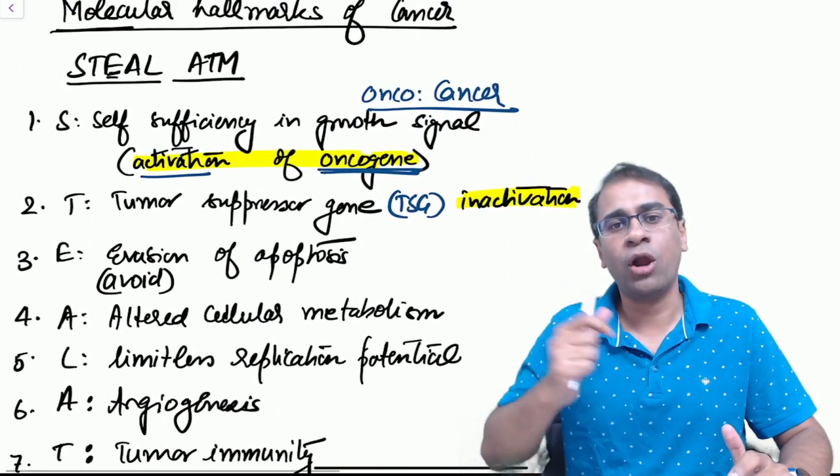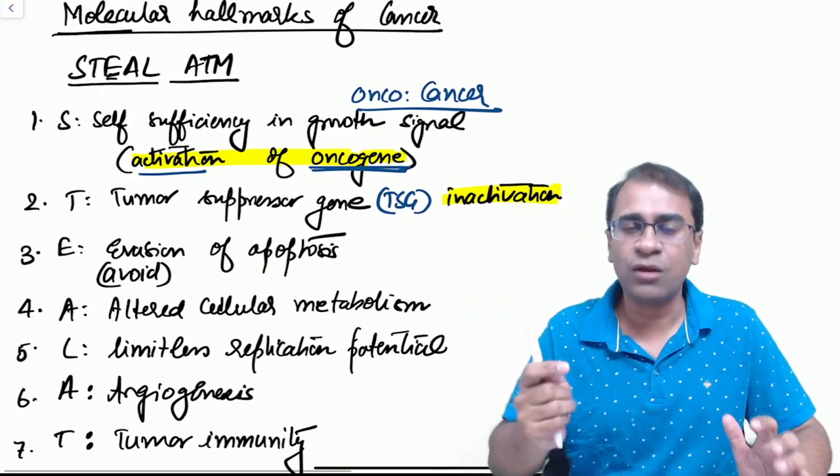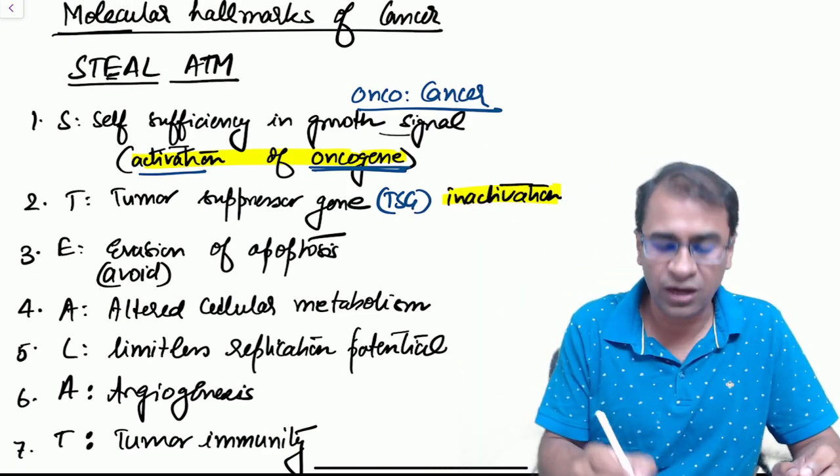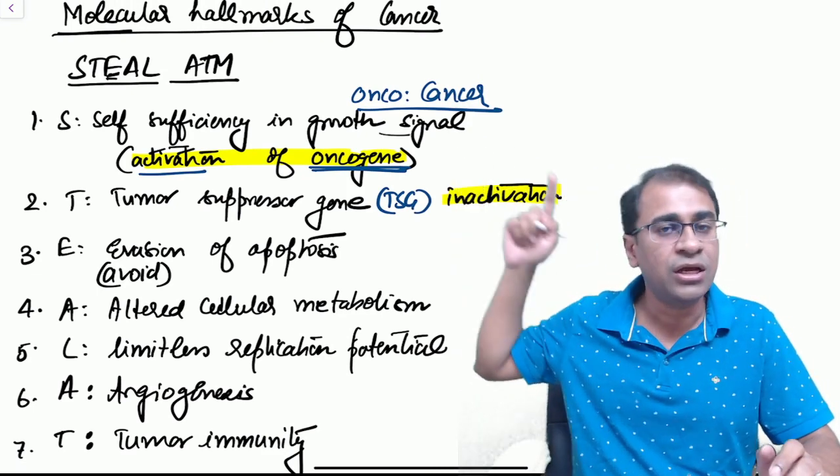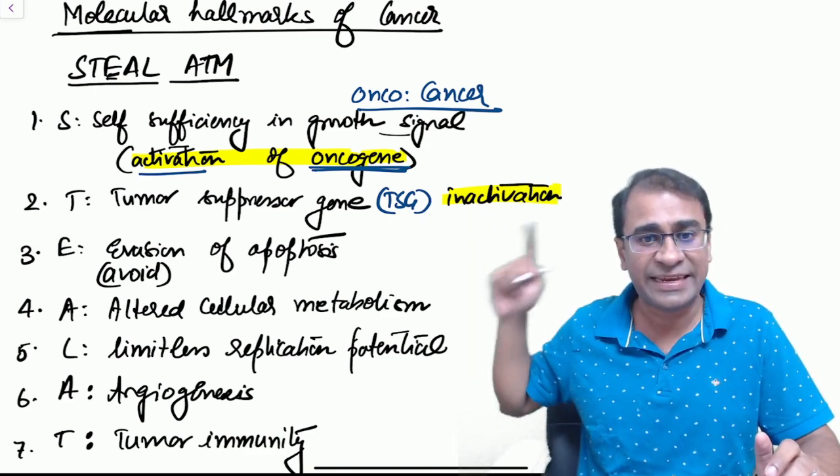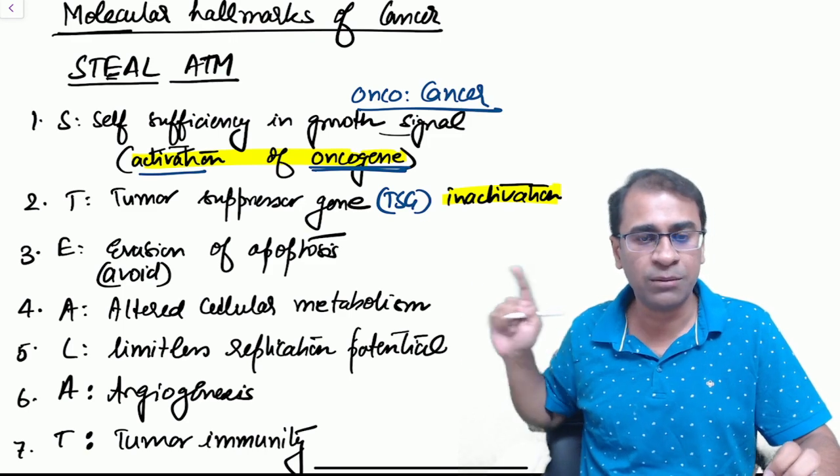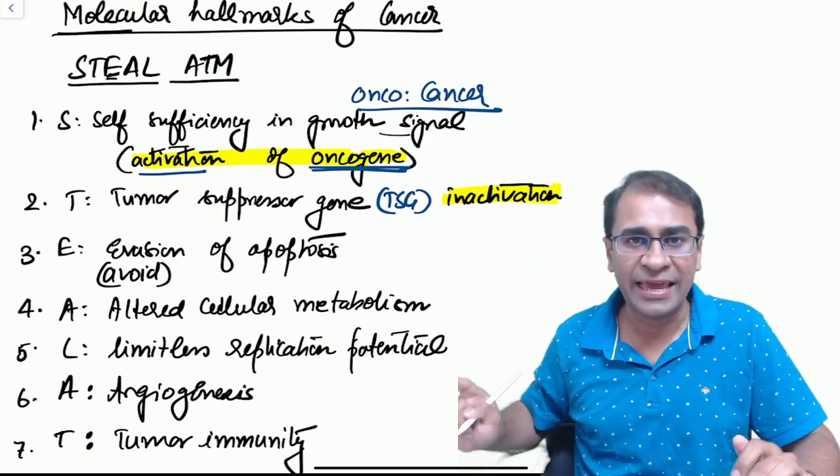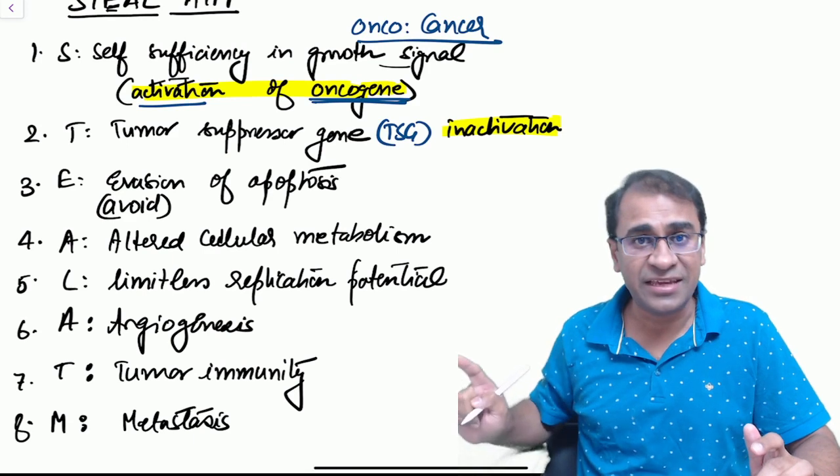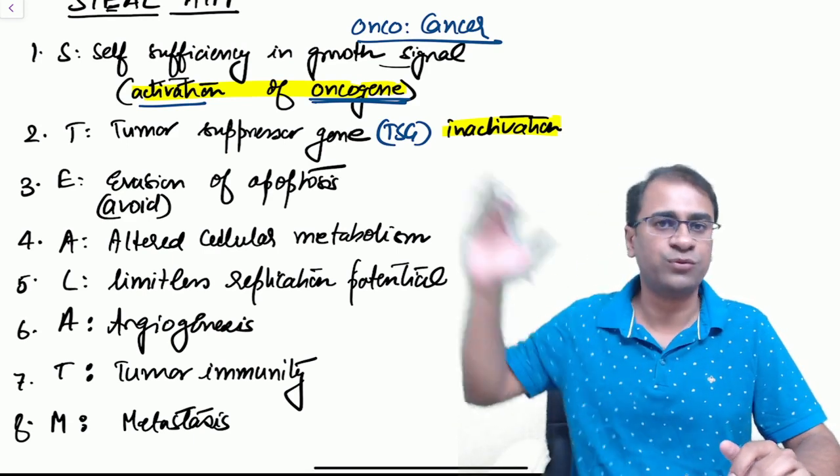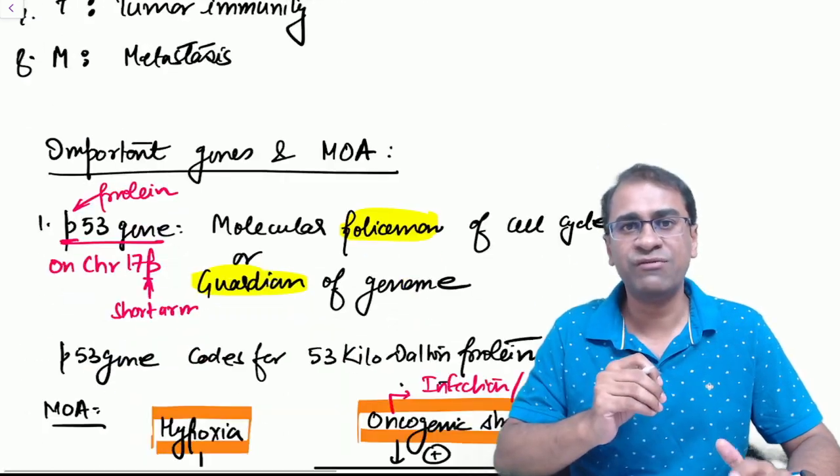What are the hallmarks of a cancer? Use the mnemonic STEEL ATM. Cancer will have self-sufficient growth signal, also called oncogene activation. Tumor suppressor gene inactivation. E is evasion of apoptosis. A is altered cell metabolism. L is limitless replication potential. A is angiogenesis. T is tumor immunity. M means metastasis. Let's start with the first one, oncogene.